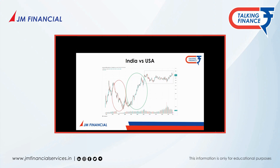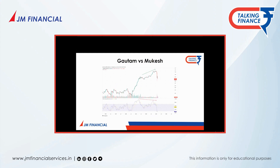Now let us see — can we compare the two biggest industrialists of our country, Mr. Gautam Adani and Mr. Mukesh Ambani? Is there a comparison that can give us an insight? This ratio chart is giving a very advanced alert — at least a profit-booking alert. What we have done is divided Adani Enterprises by Reliance to get a ratio chart.